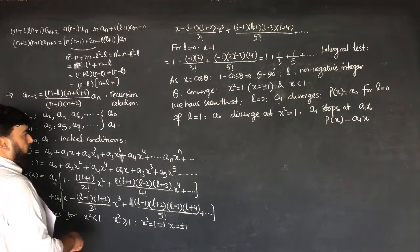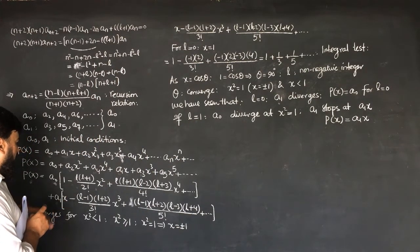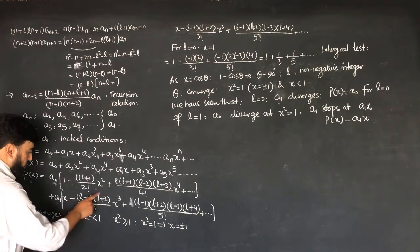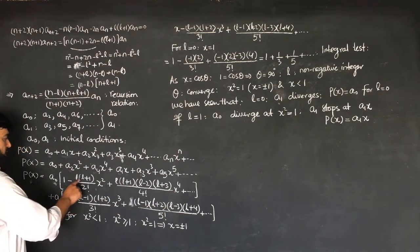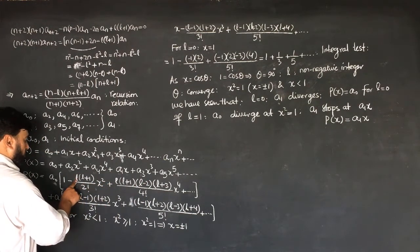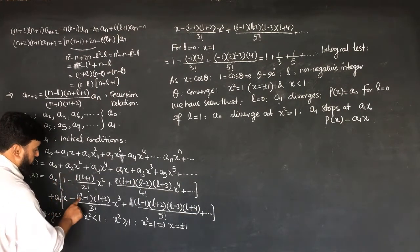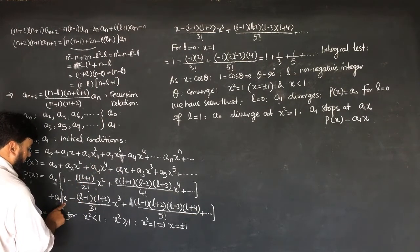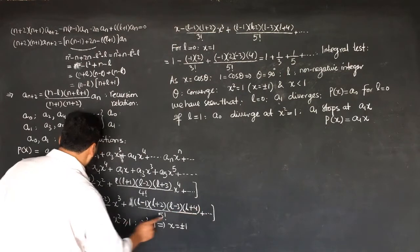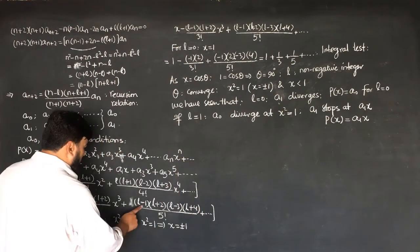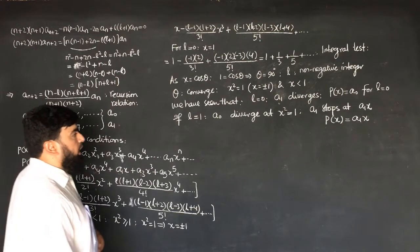When l equals 0, all terms in the even series containing l vanish, and only a_0 remains. When l equals 1, the terms containing (l-1) all vanish, so only a_1·x will remain, giving us P(x) equal to a_1·x.